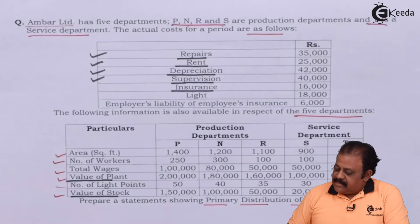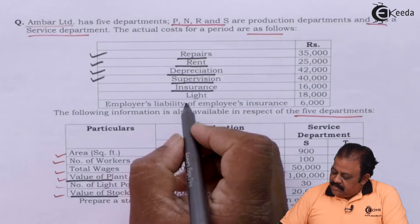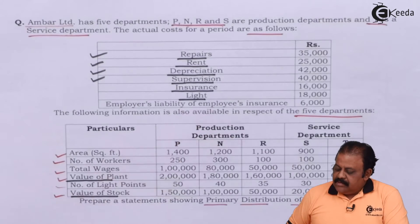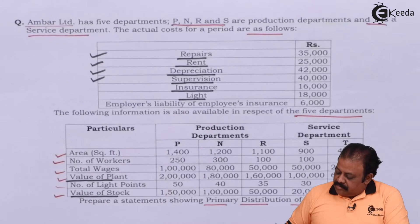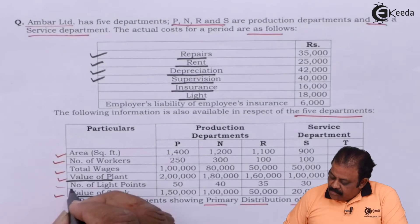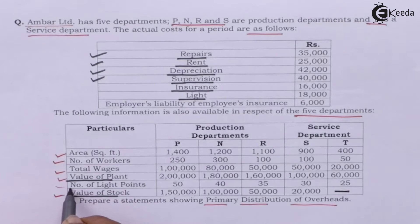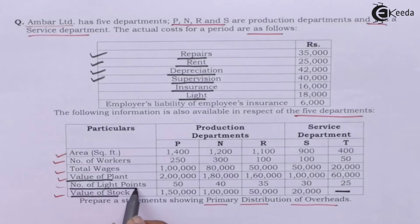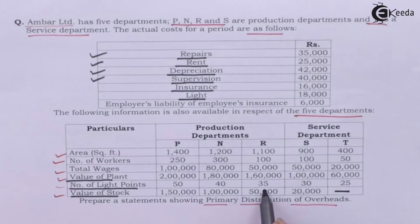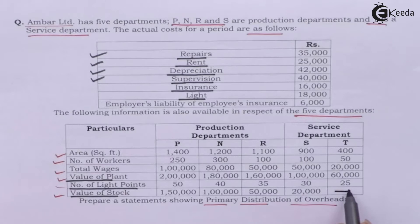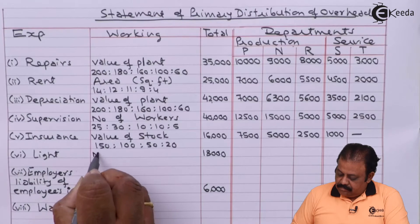The next expense is lights. This will be allocated based on number of light points.